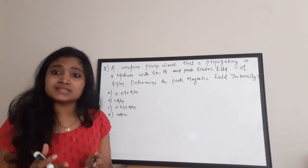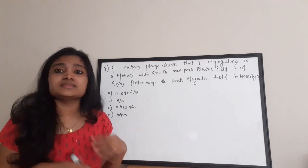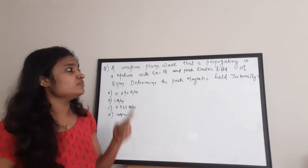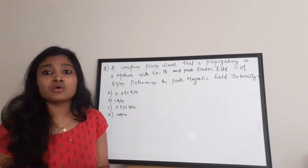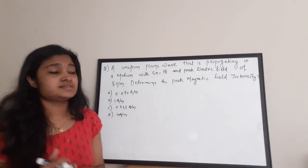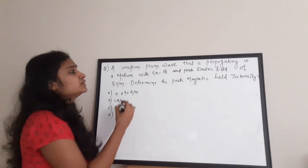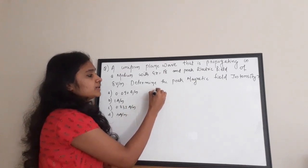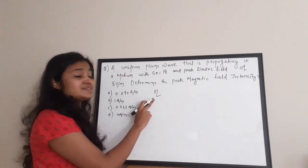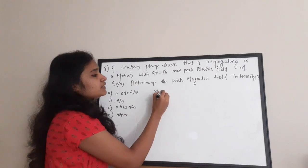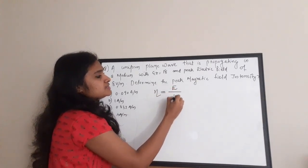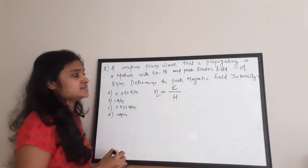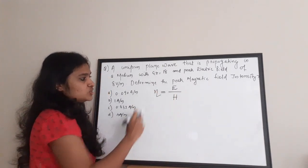This question connects electric field intensity and magnetic field intensity. We have been given the electric field value and we need to find the magnetic field intensity. The relation connecting these two is intrinsic impedance, given by eta equal to the electric field intensity divided by magnetic field intensity, that is E by H.